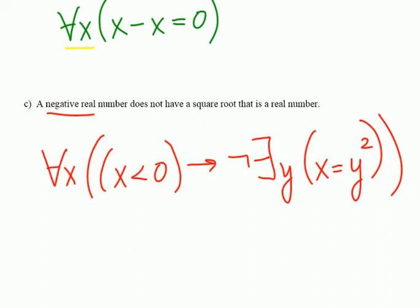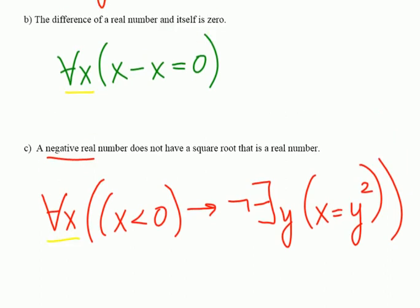Okay, that's a little bit tricky. So a negative real number does not have a square root that is a real number. Again, let's go through it. So for all x, if x is less than zero, then there doesn't exist a y such that if I square y, I get back x. Okay? Now,